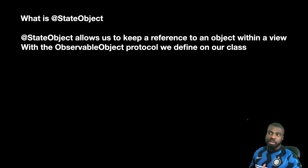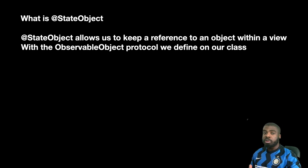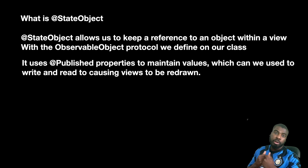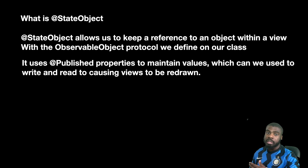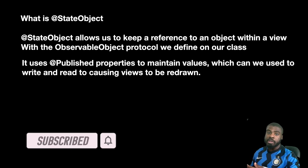For example, if you have a class or a view model with a bunch of properties that you want to use to manage the state of a view, @StateObject is what you want to use. Within your view model, you mark the properties where you want the view state to change as @Published, which triggers redraws for your SwiftUI views, and you can read and write to those properties.